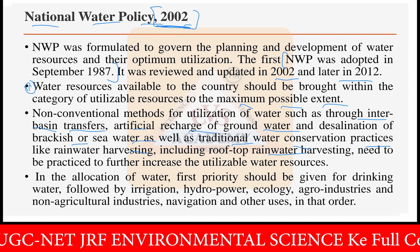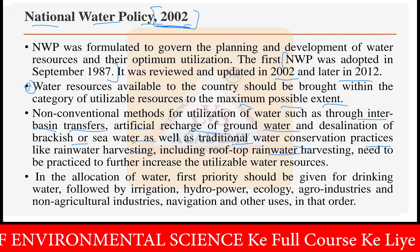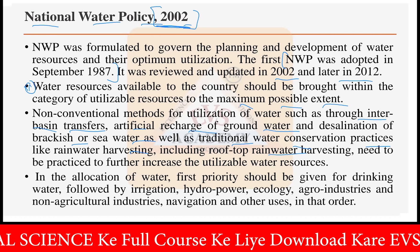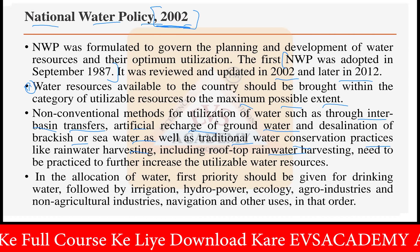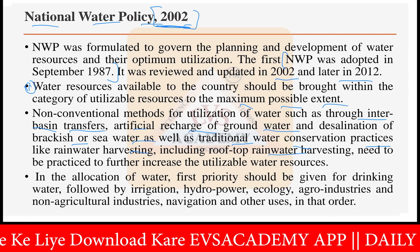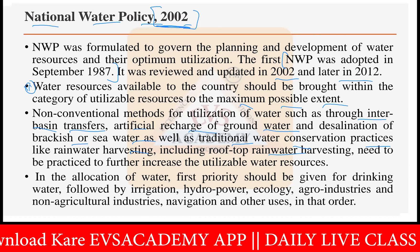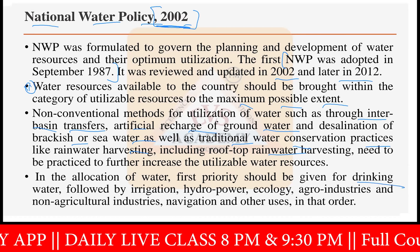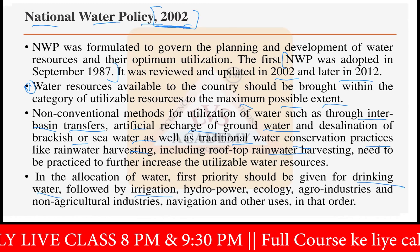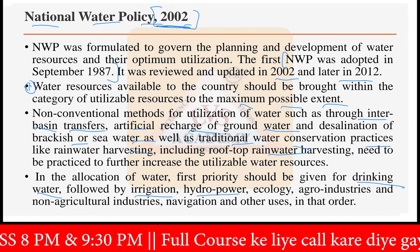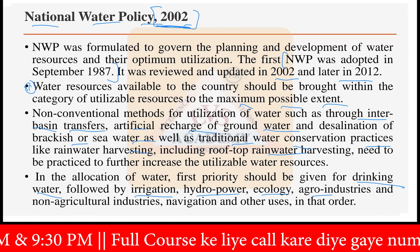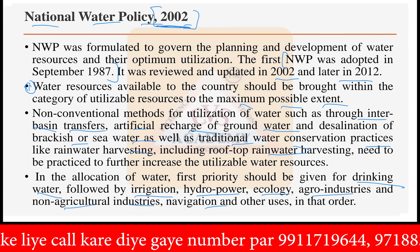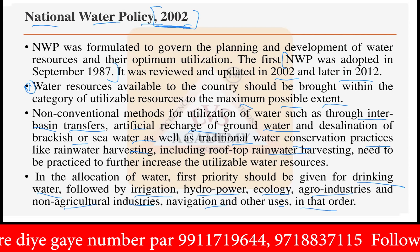The main goal is to increase utilizable water resources that can be used for human purposes. In the allocation of water, the first priority should be given to drinking water, followed by irrigation water, hydropower projects, ecology, agro-industries, non-agricultural industries, navigation, and other uses — in that order.